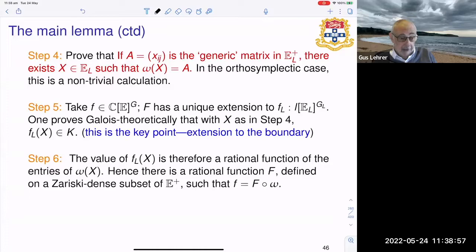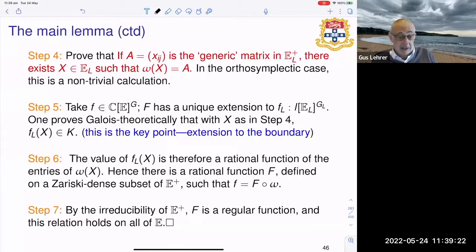And finally, if one is given an invariant function and this function has a unique extension given by the field extension, and then one proves Galois theoretically that this function actually takes values in k, and so one deduces that the value of this is a rational function of the entries of omega(x), hence as a rational function defined on a Zariski dense subset of E^+ such that f is equal to f composed with omega.